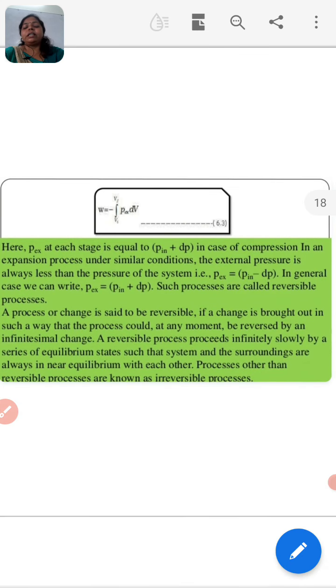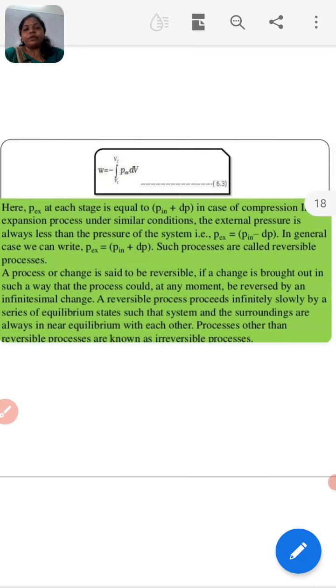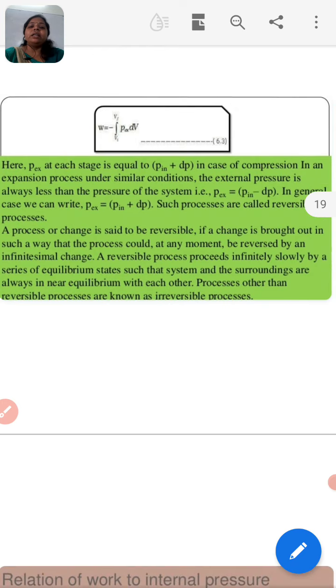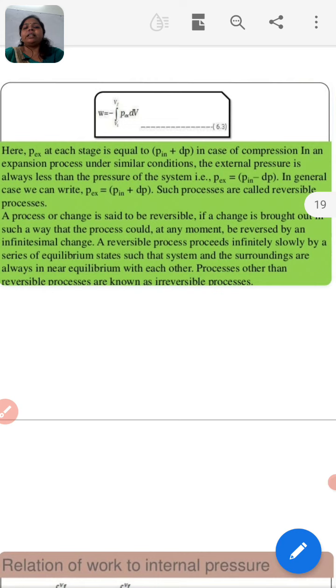Now, in such a case, we can calculate the work done on the gas by the integration as given in the next slide. Now, in this graph, in this slide, we are showing that p_ex at each stage is equal - the value of p_ex remains equal at every stage. In case of expansion, in a reversible process under similar conditions, the external pressure is always less than the pressure of the system. p_ex equals p_i minus dp in general case. We can write p_ex plus dp. Such processes are called reversible processes.